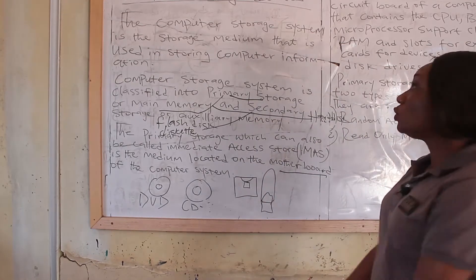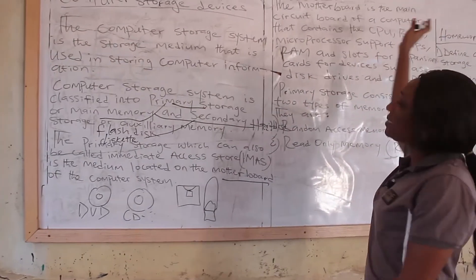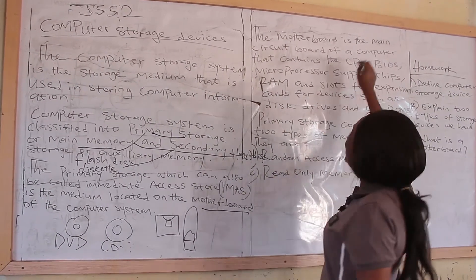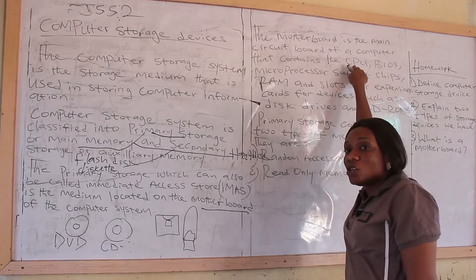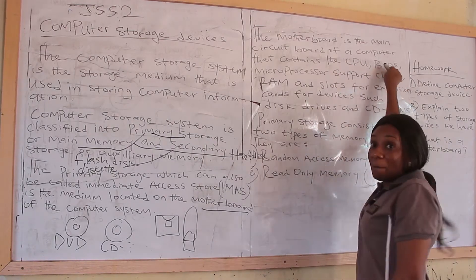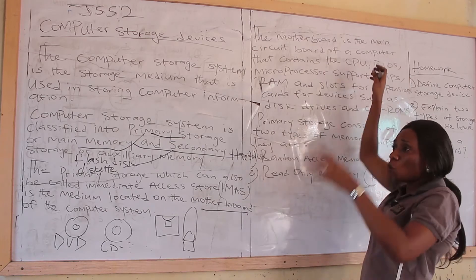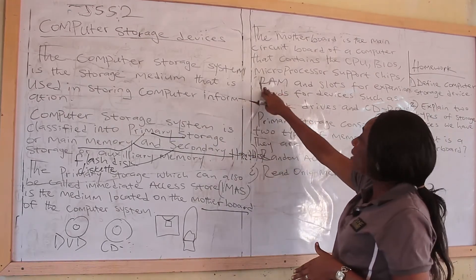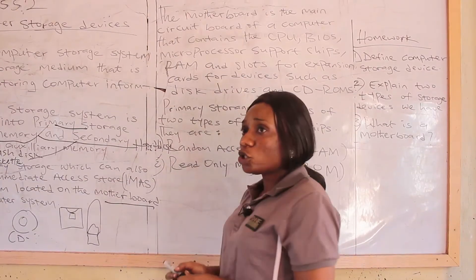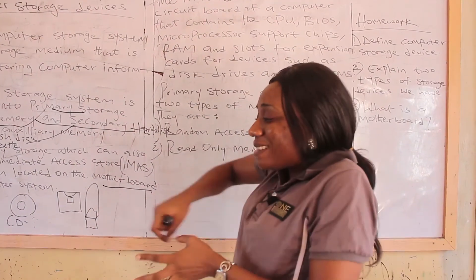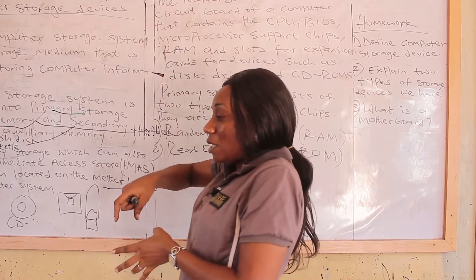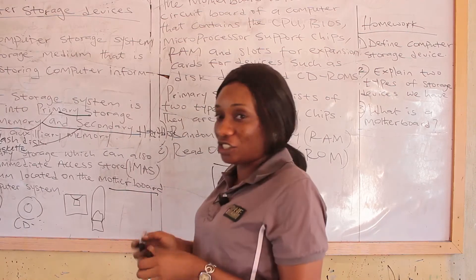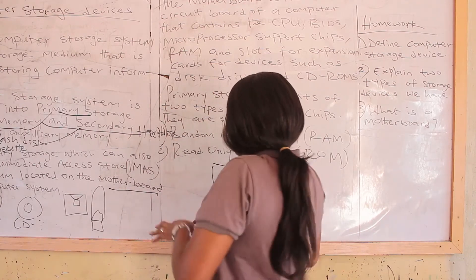The motherboard is the main circuit board of a computer that contains the CPU — central processing unit — the BIOS, which is the basic input output system that handles anything going in and coming out of the system, and the RAM, the random access memory, along with slots for expansion. When you loosen the system unit, you will see the motherboard attached inside it.